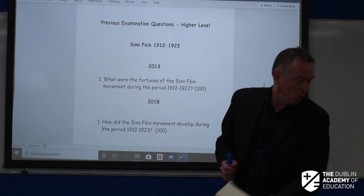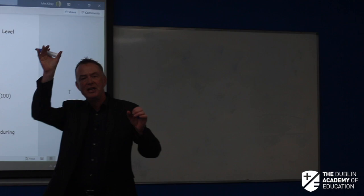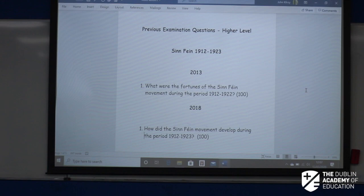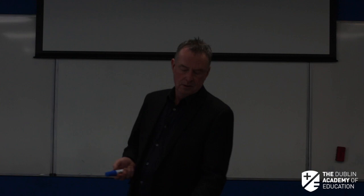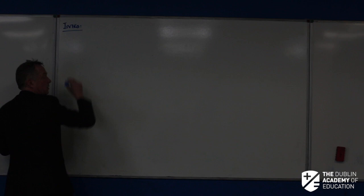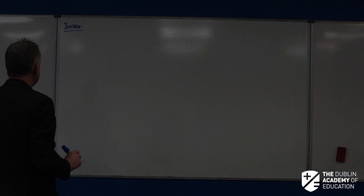We're looking at the 2013 and 2018 exam questions on Sinn Féin. I'm going to make a linear plan. The introduction is about a quarter of a page. I'm going to get in my main man, Arthur Griffith — a journalist by trade. He plays a big part in what we call the Irish Revolution. He dies at the age of 50 in 1922, and his contribution is totally overshadowed by Collins, but Griffith is a very, very important character.